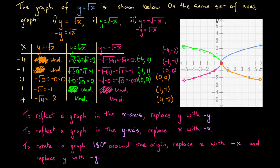So that's how you can figure out whether a graph is reflected in the x-axis, the y-axis, or rotated 180 degrees around the origin. It's very useful for graphing — our original guesses took very little time using these rules, while constructing the table took much longer. If you know these rules, you can quickly graph functions without having to work out a full table of values.